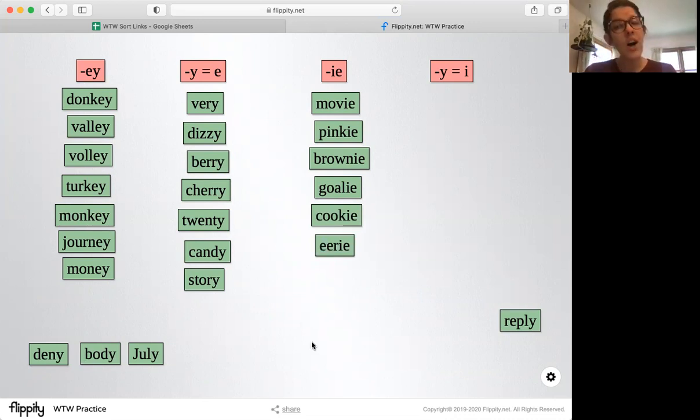So far all of our words that end in ey, y or ie have an e sound. But every once in a while, when our word ends in y, it makes an i sound rather than an e sound like reply. If this word were to follow the rule of y sounding like e, the word would be reply. But that's not how we say it. We say reply.